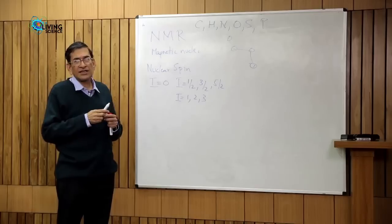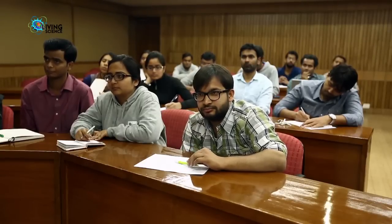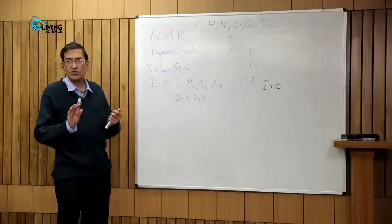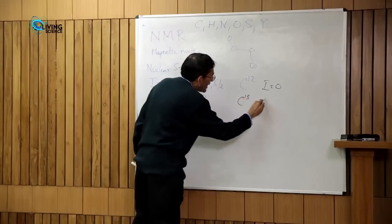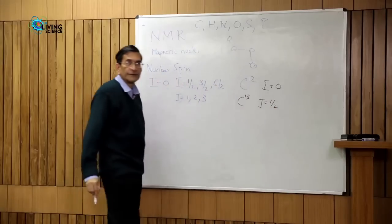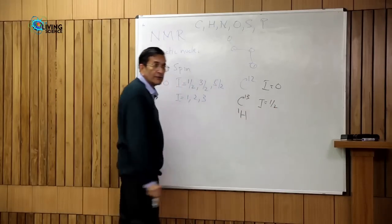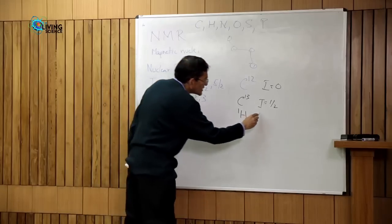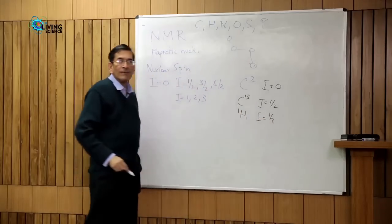Carbon has the isotope C-12, and carbon-12 has I equal to 0 — it has no spin. Carbon-13 has spin I equal to one-half. The hydrogen isotope hydrogen-1 has spin I equal to one-half. So these are what we would call magnetic nuclei.